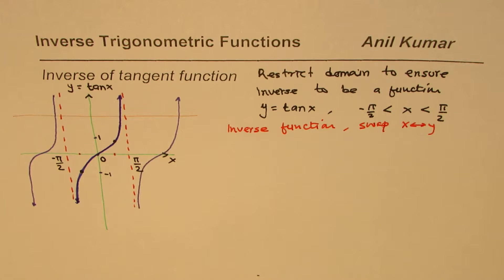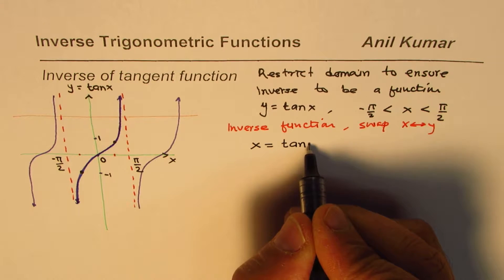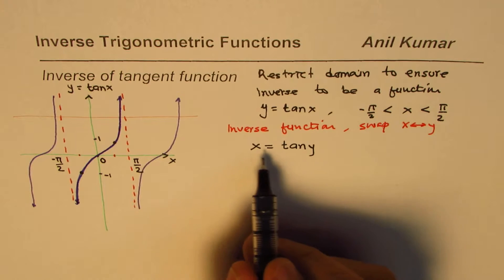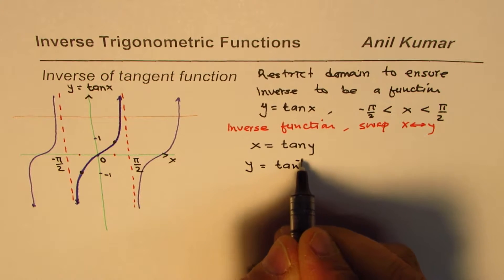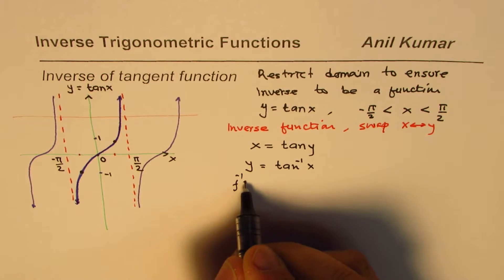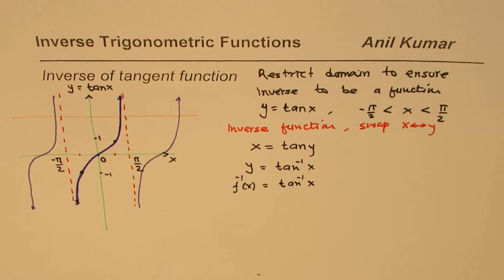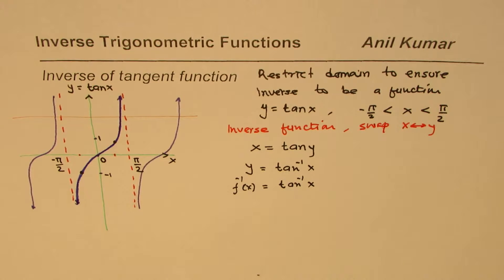The first method is to swap x and y. If we do that, we get x = tan y. That is the inverse. When we swap x and y, we are talking about the inverse function. From here we can write y = tan⁻¹(x). So you just swap and write it down. Both y = tan⁻¹(x) and x = tan y are inverse functions and mean the same thing.